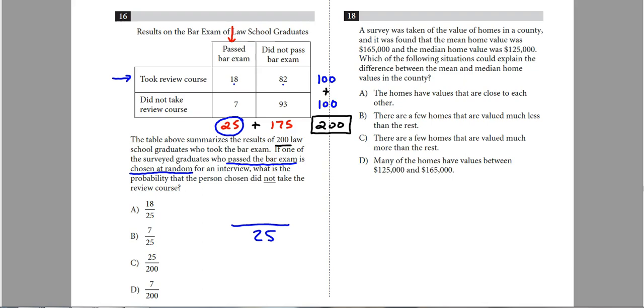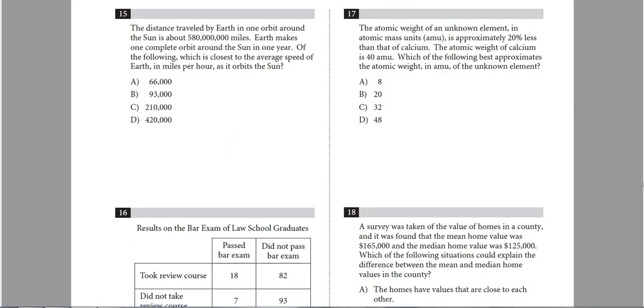So people who did not take the review course, it looks like there are 7. 7 out of 25 would be the probability of people that did not take the review course. So the correct answer there is B.